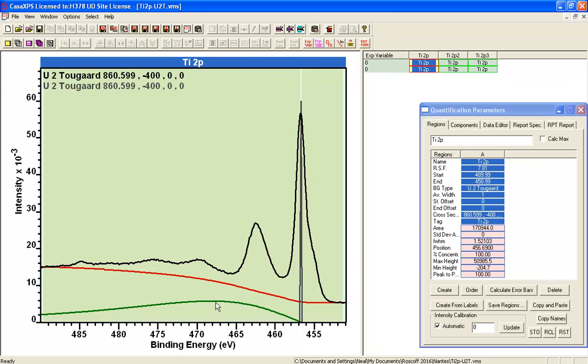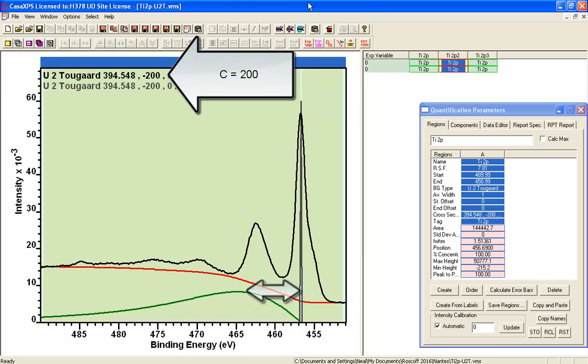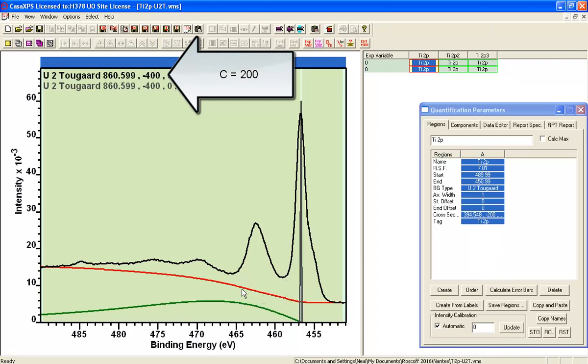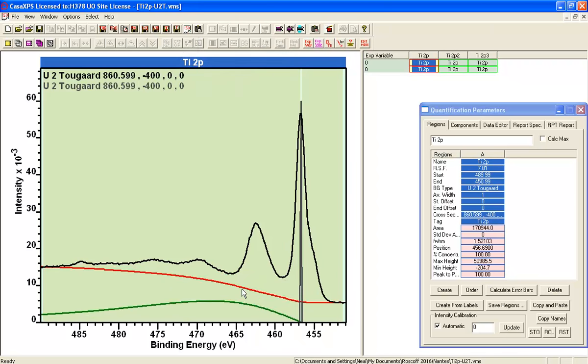And if I step, you'll see that I've now got one with a C parameter of 200. The cross section moved towards the titanium peaks, and hence the background produced more structure and more shape.